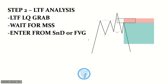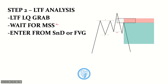Now step two. Following our liquidity grab on the higher time frame, we move to the lower time frame — maybe the five-minute, three-minute, or one-minute — and we're going to look for a lower time frame liquidity grab. For example, in this case we see equal highs being grabbed. Through this move, those equal highs have been grabbed. We're waiting for a lower time frame liquidity grab — this can be a higher low being swept, or equal highs or equal lows being swept.